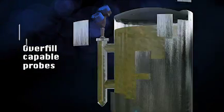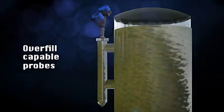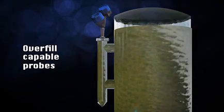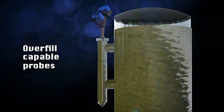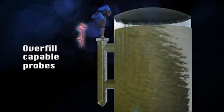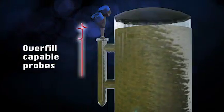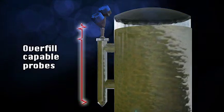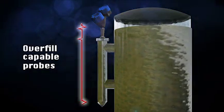The Eclipse Model 706 is the only guided wave radar transmitter on the market today with a full range of overfill capable probes. Unlike other GWR units that use algorithms to infer level readings in top of the probe dead zones, the Model 706 measures true level to within specification, all the way up to the process flange.